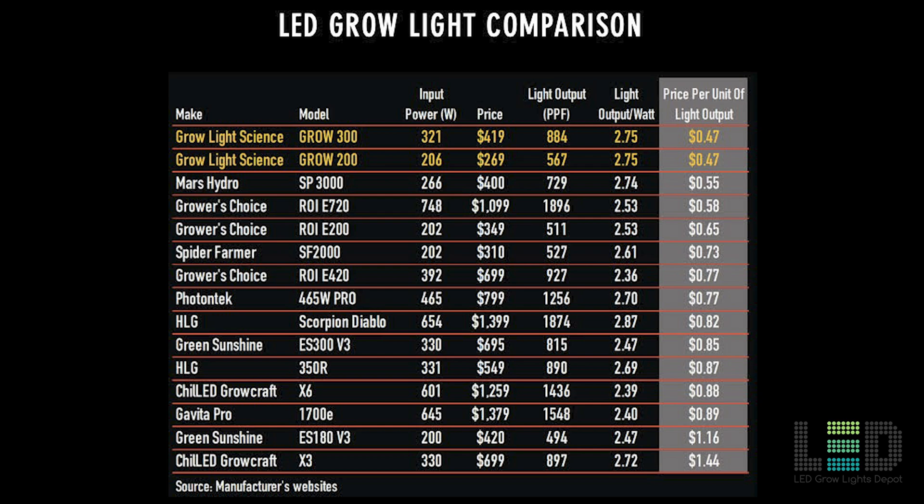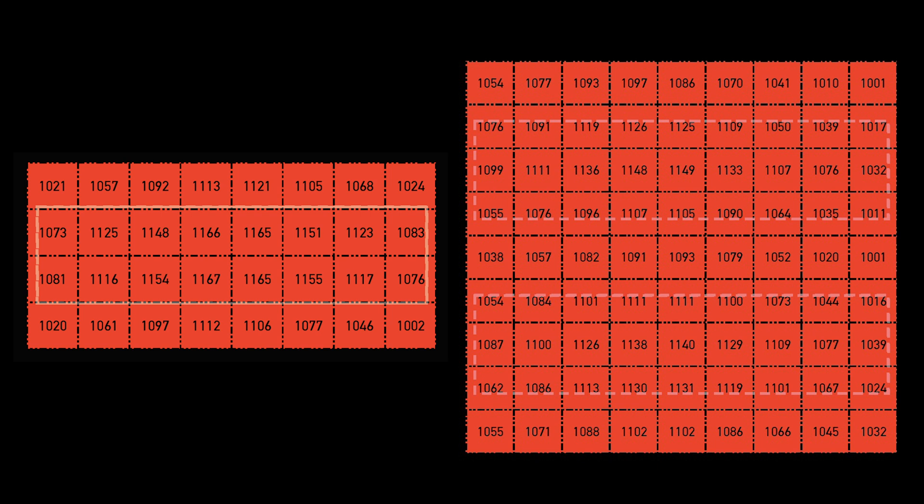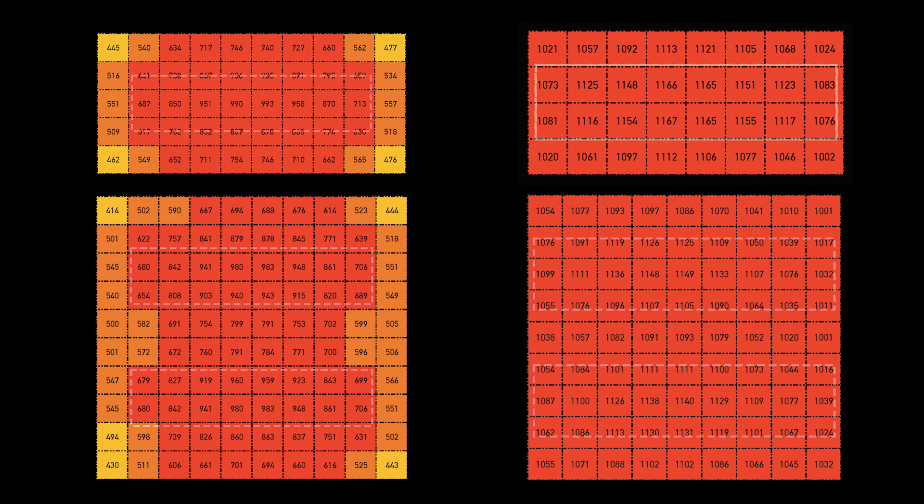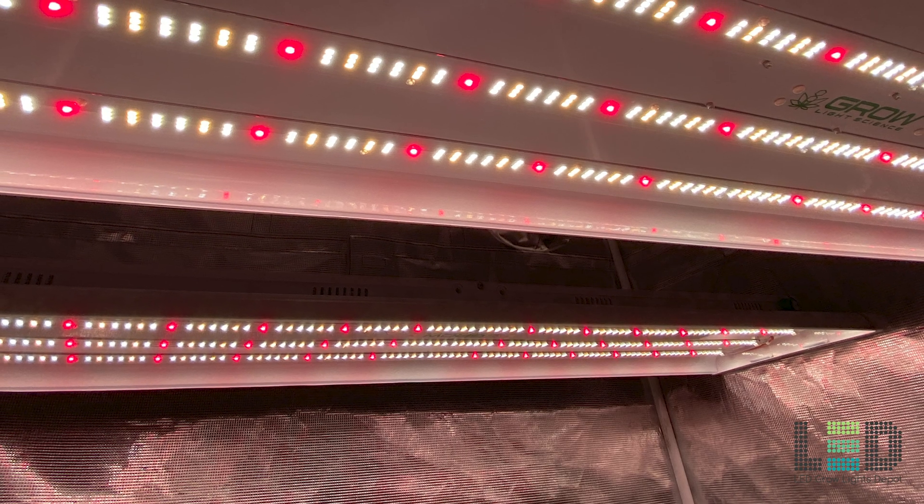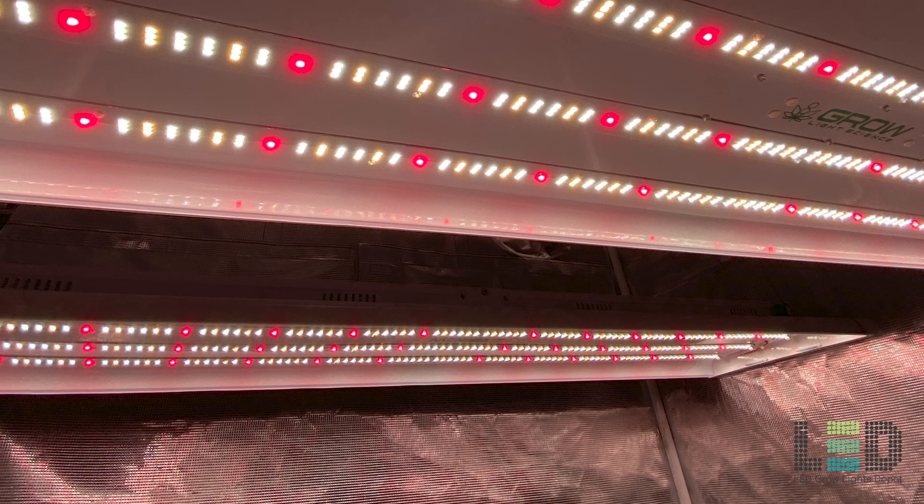The PPFD on this light looks really good in its respective coverage area, whether that is one light in a 2x4 or two lights in a 4x4. Not only are the PAR readings all above 1,000 micromoles per second in a 2x4 or 4x4 reflective area, but the uniformity is outstanding. The high red spectrum is quite different from most other lights on the market. I mean, there really is a lot of red in the spectrum, so expect excellent flowering results. Grow Light Science really prides themselves on the high number of red diodes, indicating that this is key to productive photosynthesis and excellent flowering results.